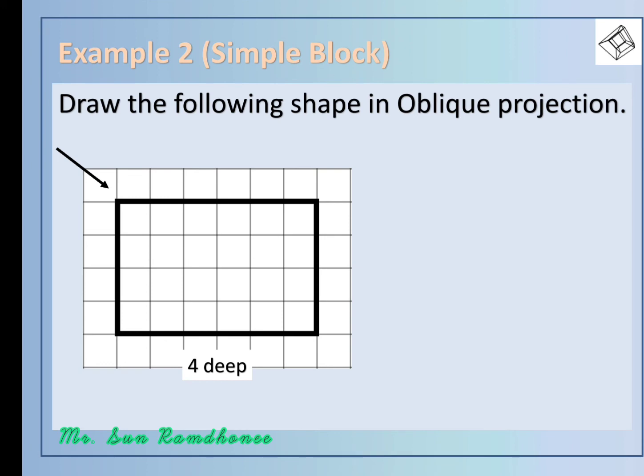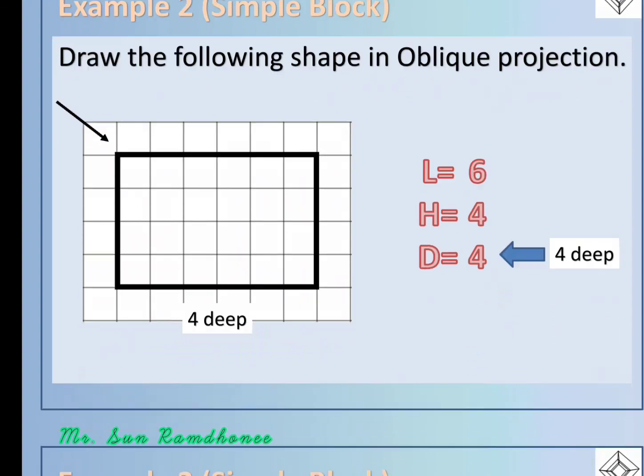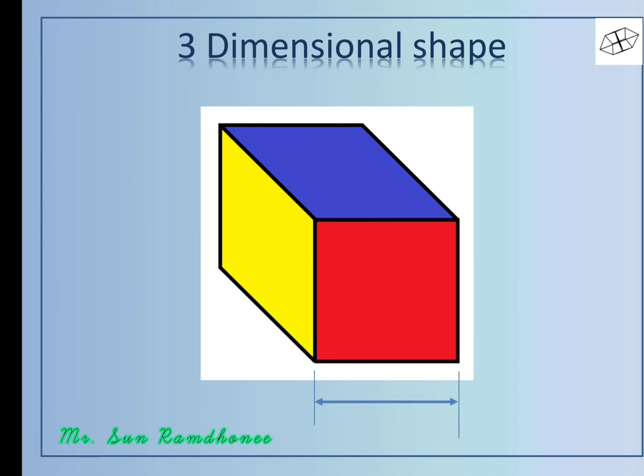In the second example, the front view is a rectangle. Here as you may have observed, the direction of arrow has changed, it has moved to the left. The depth also is different. The length for the shape is six, the height is four, and the depth is four, because it's written there four deep. The direction of length remains the same. The direction of the depth has changed, it has moved to the left, whereas the height still remains vertical.